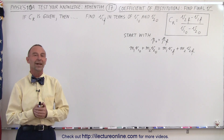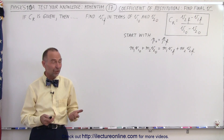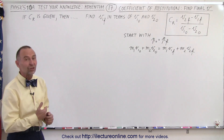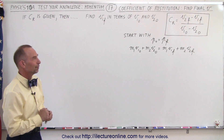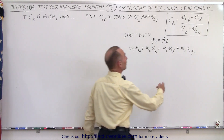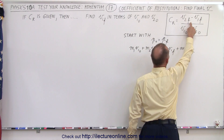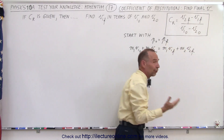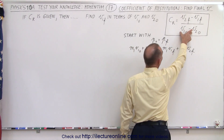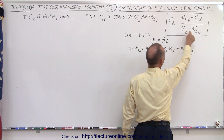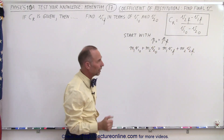Welcome to ElectronLine. Our next problem dealing with momentum is the coefficient of restitution. The definition is that it's the velocity of the second object after the collision minus the velocity of the first object after the collision, divided by the difference of their initial velocities. Notice that the order in the denominator is different than the order in the numerator.